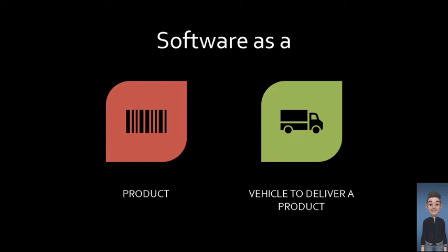When we say software as a product, it delivers the computing potential embedded by computer hardware such as a computer, a phone, a smartwatch, a calculator, and many other software-enabled hardware products. As a vehicle, software is the medium for delivery of products such as operating systems that control the computer, network operating systems to manage communication over networks, and applications that deliver services like GrabFood, Grab, and FoodPanda.